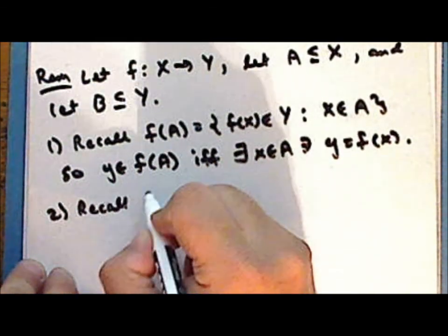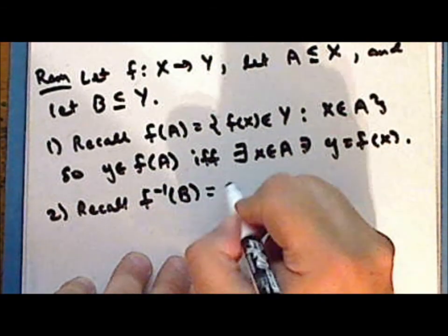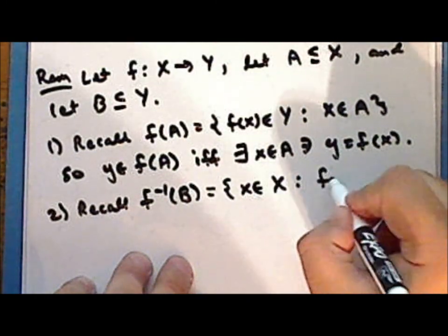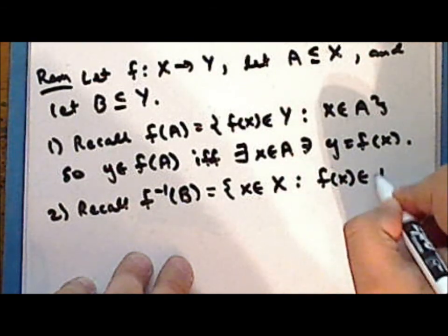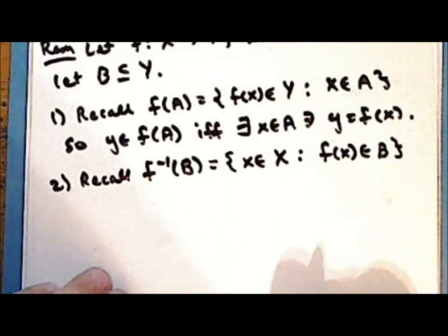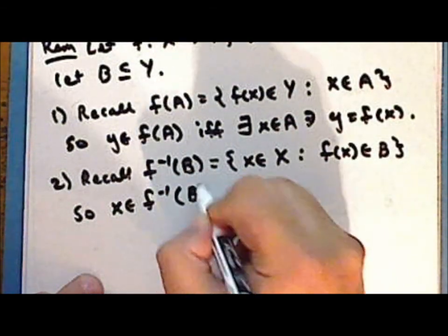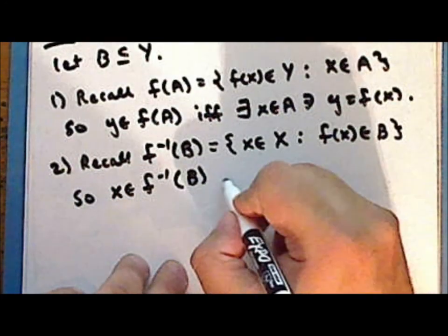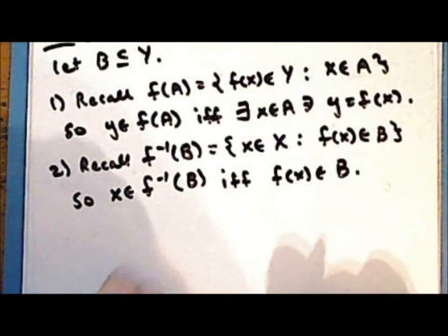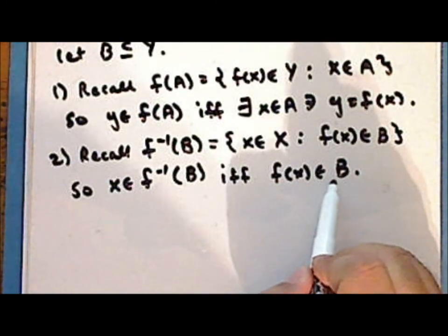And recall that the inverse image of the set B under the map f is the set of all those elements x in the domain such that f(x) is an element in the set B. So a point x is in the inverse image of B if and only if f(x) is an element in the set B — that is, if and only if the function f maps that element into the set B.